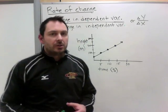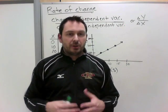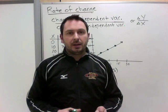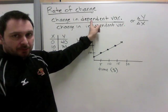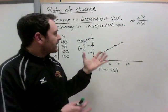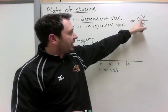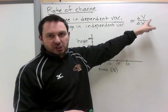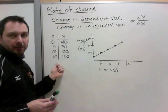Now we're looking at rate of change. The rate of change is exactly as it sounds — it is how fast something is changing. When you're driving at 80 km per hour, that is the rate of change: how far you're going over time. The rate of change is the change in the dependent variable divided by the change in the independent variable. The triangle symbol is the Greek letter delta, meaning 'change.' So it's the change in Y divided by the change in X — how much Y is changing divided by how much X is changing.